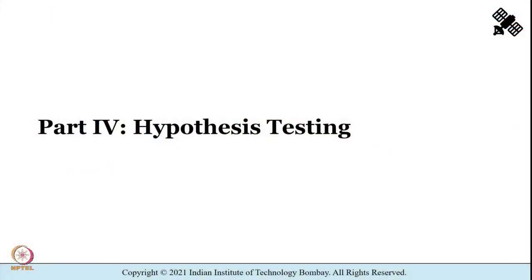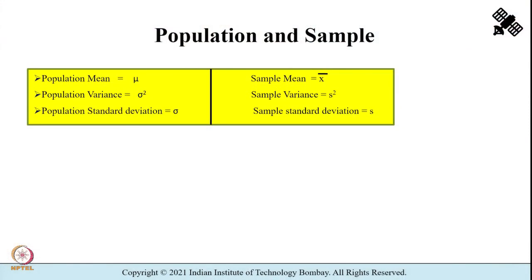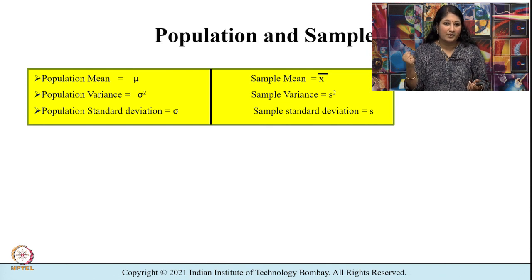Before I begin: in hypothesis testing, we typically collect sample data, try to generate statistics from the sample data, and then use this information to infer about population parameters. I want to make a clear distinction between population and sample. We collect the sample data and using the sample data we try to generate statistics. The statistics can be mean, standard deviation, or variance, and using them we try to infer about population parameters.